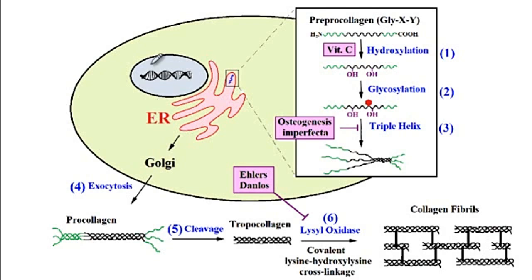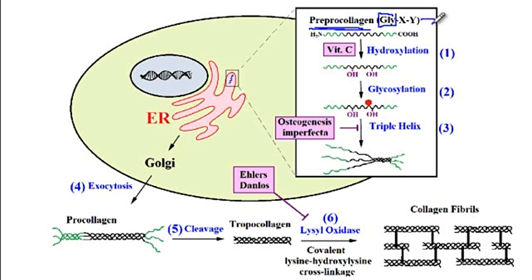The mRNA is being transcribed inside the nucleus, and it will be sent inside the rough endoplasmic reticulum where ribosomes will translate the mRNA into the pre-procollagen. The pre-procollagen is made of repeating sequences of glycine, where glycine repeats as every third amino acid residue — glycine, two amino acids, glycine, two amino acids, and so on. These X and Y positions can be any amino acids, but they're most frequently occupied by proline and lysine.